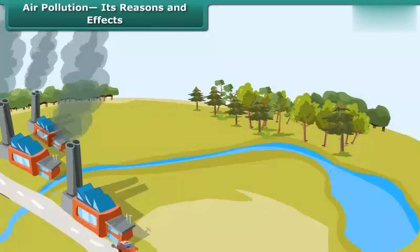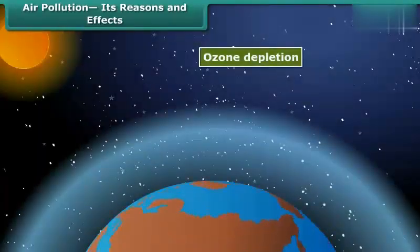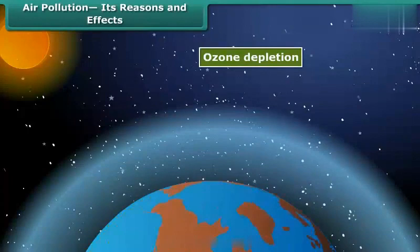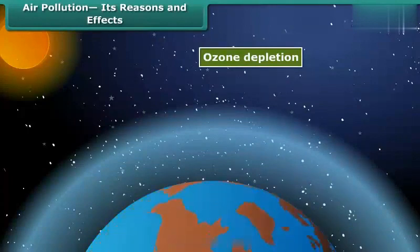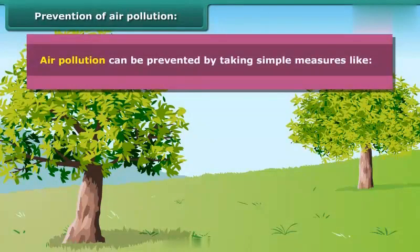Air pollution also creates global problems such as ozone depletion by gases like chlorofluorocarbon, and global warming by carbon dioxide. Air pollution can be prevented by taking simple measures.